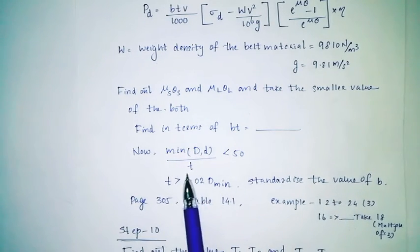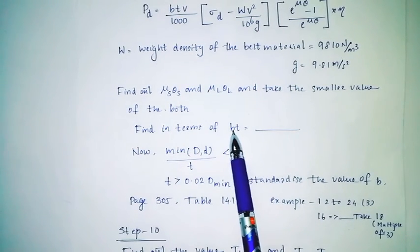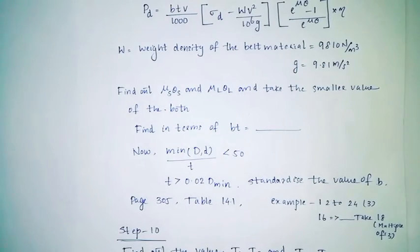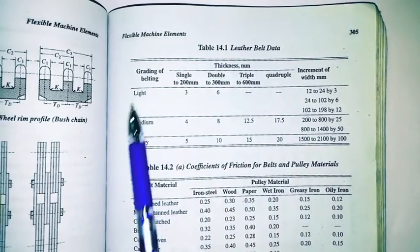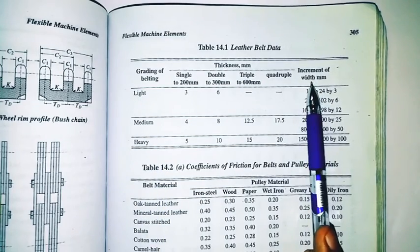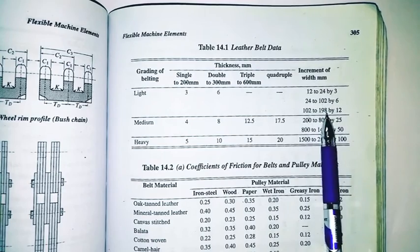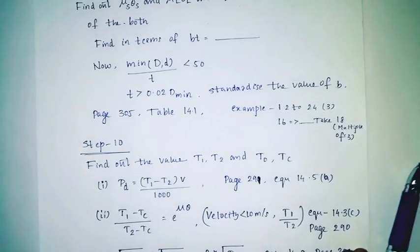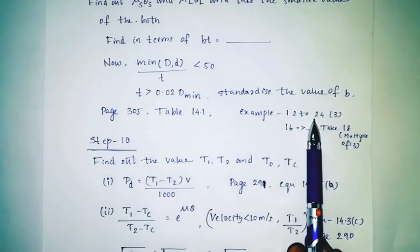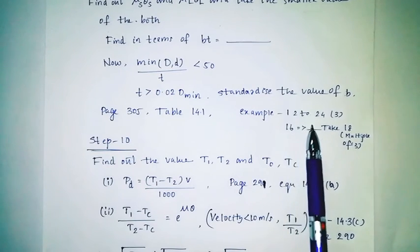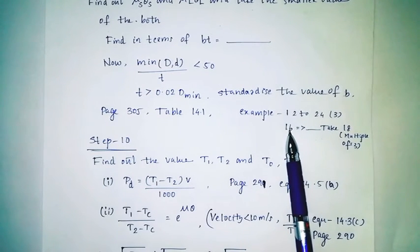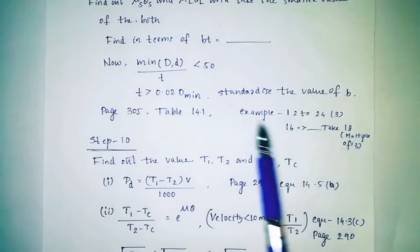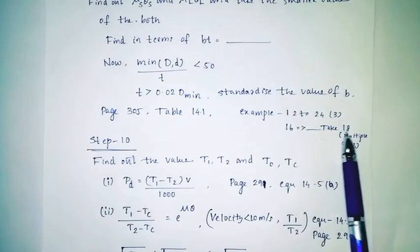Standardize the value of b. Page number 35, Table 14 — light, medium, heavy — increment of width: 12 to 24 by 3. For example, if you have number 14 and select a multiple of 3, the nearest multiple is 16. So the standard value of b is 16.